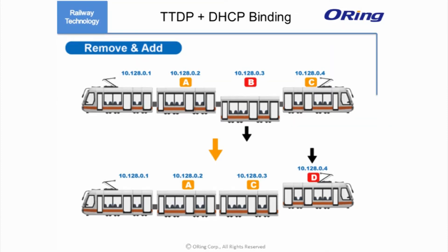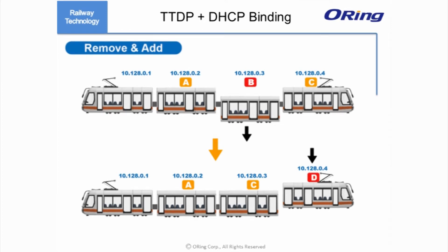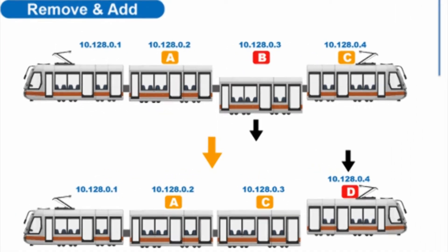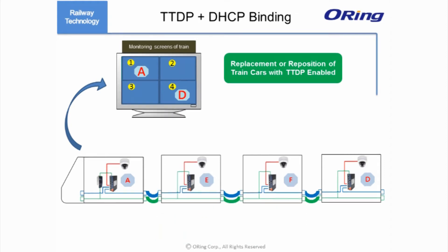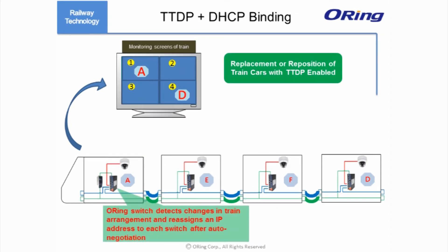TDDP and DHCP binding also work perfectly for adding and removing train carriages. When switch B is removed and switch D is added, switch C which takes car B's place will be assigned a new IP address based on its location. The added carriage where switch D belongs will also receive a new IP address — the original IP address of switch C — because switch D is now in the fourth carriage. When switches B and C are replaced with new switches E and F, they will inherit the IP addresses of B and C due to their arrangement in the train consist.